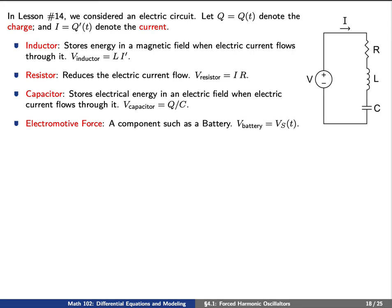As another example, in lesson 14 we considered an electric circuit. Let q(t) be the charge at time t and i equals q'(t) be the current at time t. We consider four components: first, an inductor, denoted L, which stores energy in a magnetic field whenever electric current flows through it — essentially a wire wrapped in a coil. The voltage in an inductor is L times di/dt, the derivative of the current.